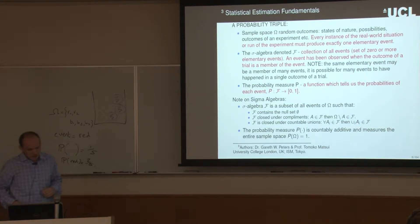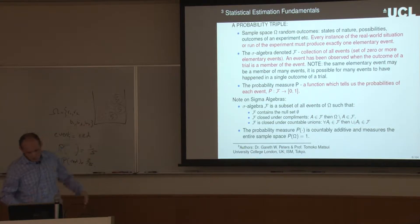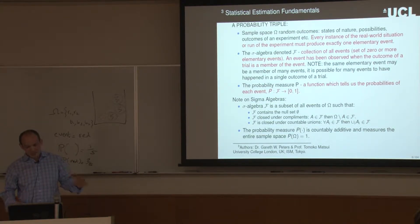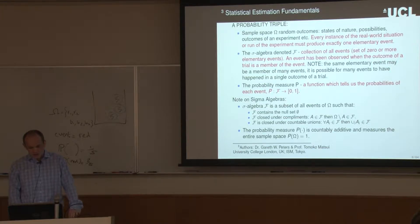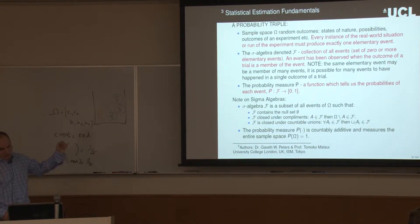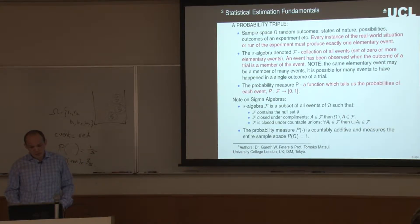The sample space omega is the space of random outcomes — the states of nature. Every instance of the real world situation or each run of the experiment must produce exactly one outcome, which is an elementary element. Then we have the sigma algebra, usually denoted with a calligraphic F, which is a collection of all events, potentially zero or more elementary elements. It's up to the modeler to decide. An event is observed when the outcome of a trial is a member of the event.